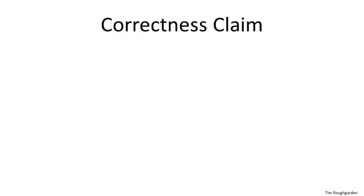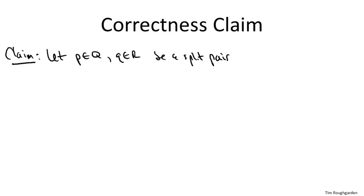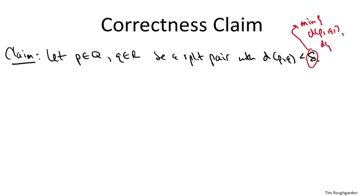Let me phrase the claim in terms of an arbitrary split pair with distance less than delta. Suppose there exists a point P on the left side and a point Q on the right side — a split pair — with distance less than delta. Recall delta is the minimum of D(P1,Q1) and D(P2,Q2), where P1,Q1 is the closest pair entirely in Q and P2,Q2 is the closest pair entirely in R. This is exactly the unlucky case — neither recursive call successfully identifies the closest pair of points.